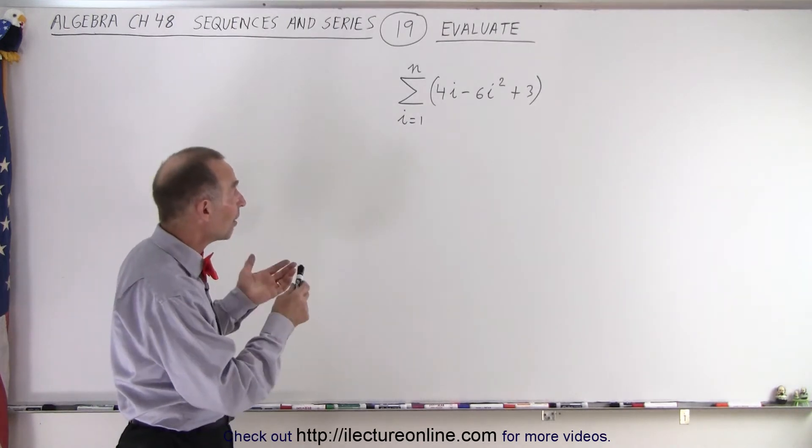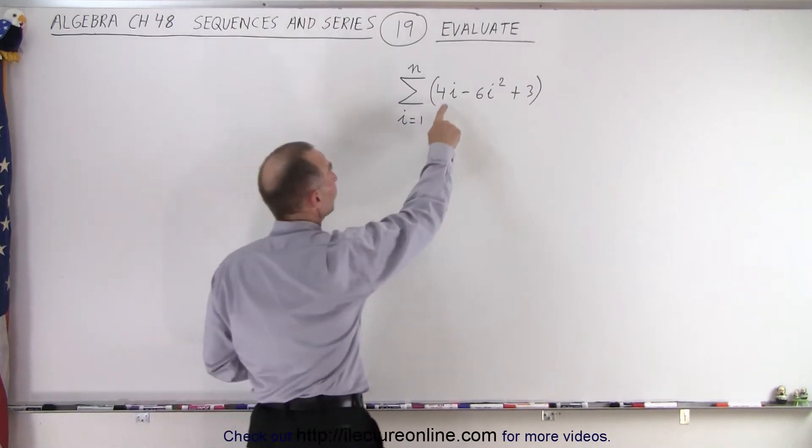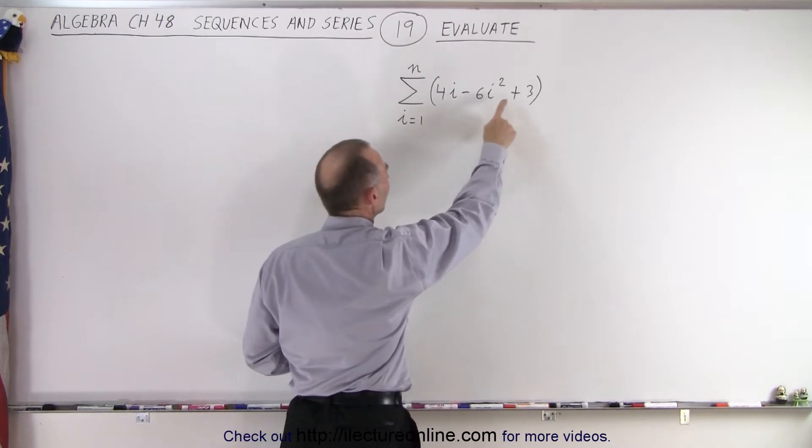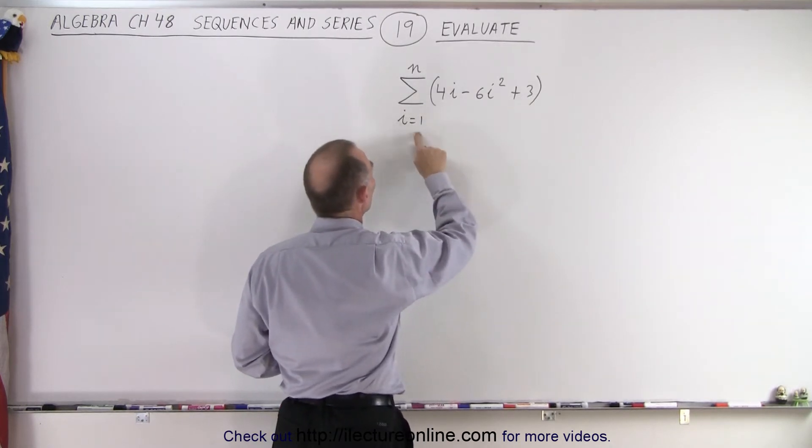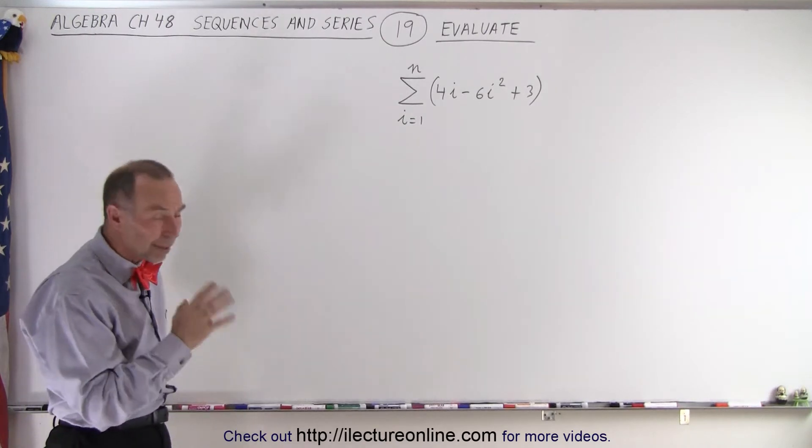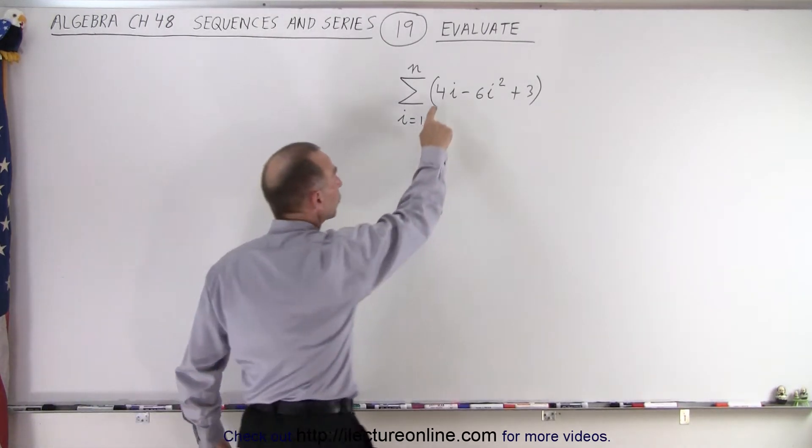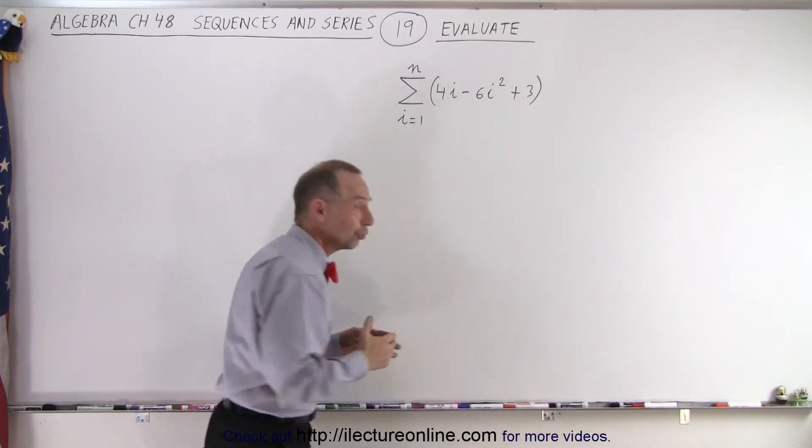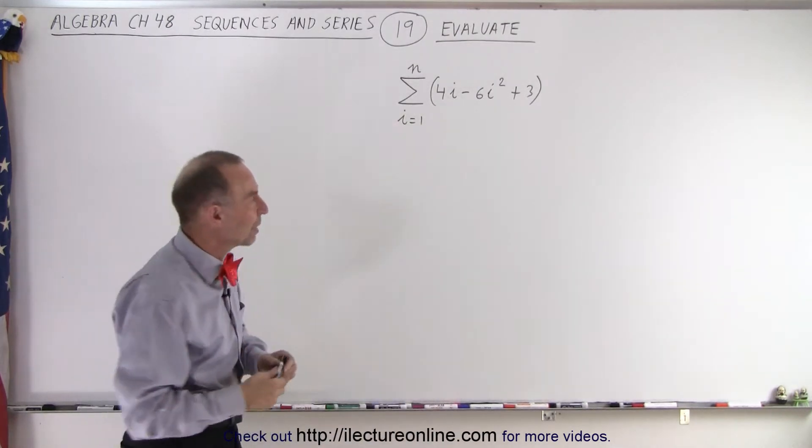Here we have the sum of three terms: 4i minus 6i squared plus 3 when i goes from 1 to n. And we're supposed to evaluate that. Remember the rule: when we had more than one term, we could actually separate those out and turn those into three separate summations.